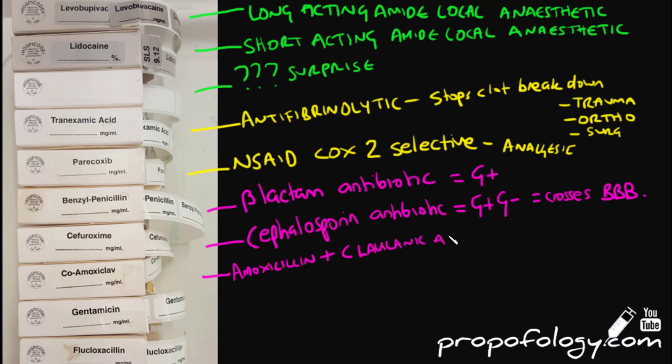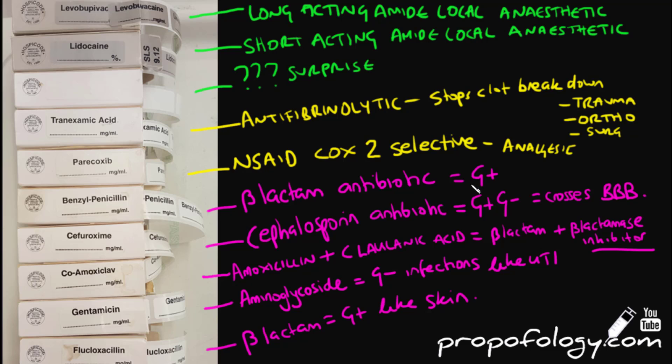Co-amoxiclav is a combination of amoxicillin and clavulanic acid. It's a beta-lactam mixed with a beta-lactamase inhibitor. Beta-lactamase is basically one of the things produced by bacteria which causes resistance. Gentamicin is a very common aminoglycoside prescribed in the hospital. It's excellent against gram-negative infections such as those that cause urinary tract infections. Finally, flucloxacillin is also a beta-lactam like benzylpenicillin. It's good against gram-positive organisms such as those that cause skin infections.